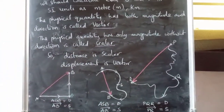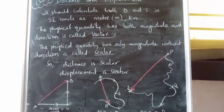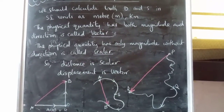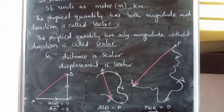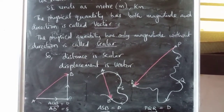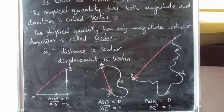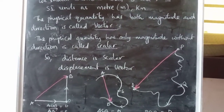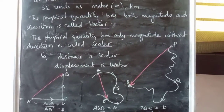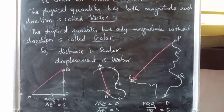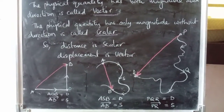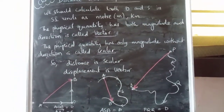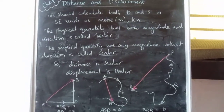I hope you all understand what is distance and displacement, and what is scalar and vector. You should write the differences between scalar and vector, and also the difference between distance and displacement. You can also show it as a diagram. If you have any doubt, please comment below.